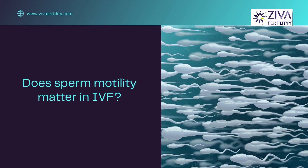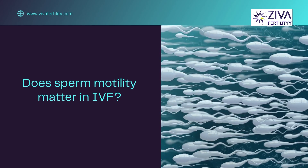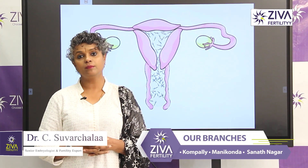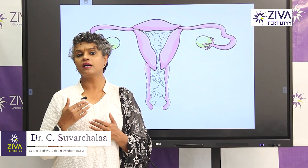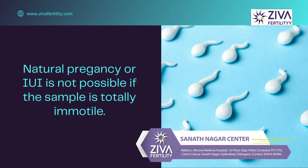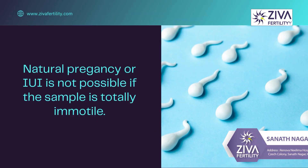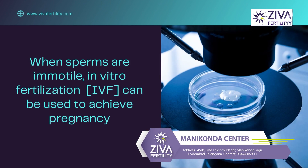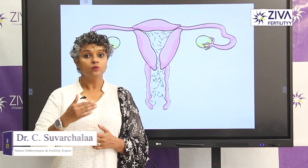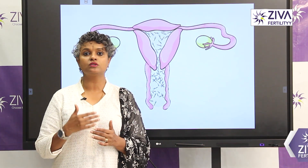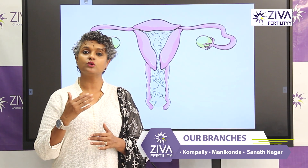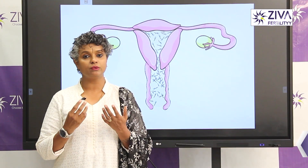In IVF, does motility also play an important role? Motile sperms can be easily picked because they are alive and inseminated into the egg. However, if a sample is totally immotile, natural conception or IUI is not possible. But with IVF, even if the sperms are immotile, we can still try for pregnancy — certain reagents and solutions can be added to the sperms to help the immotile but vital ones start moving, and those sperms can then be selected and injected into the oocyte to form an embryo, which is transferred into the uterus to bring about pregnancy.